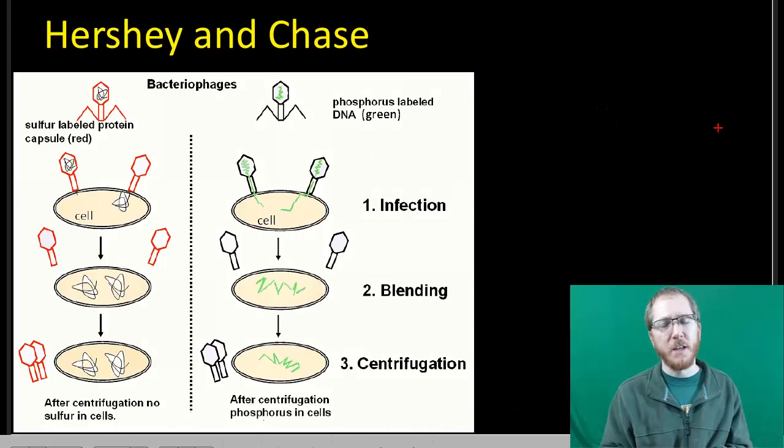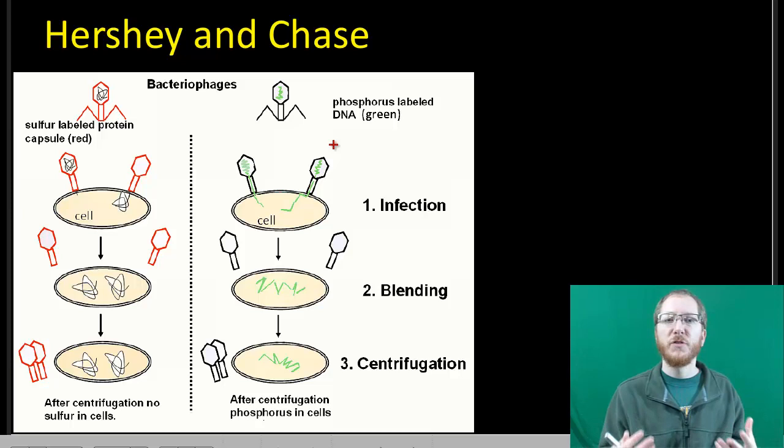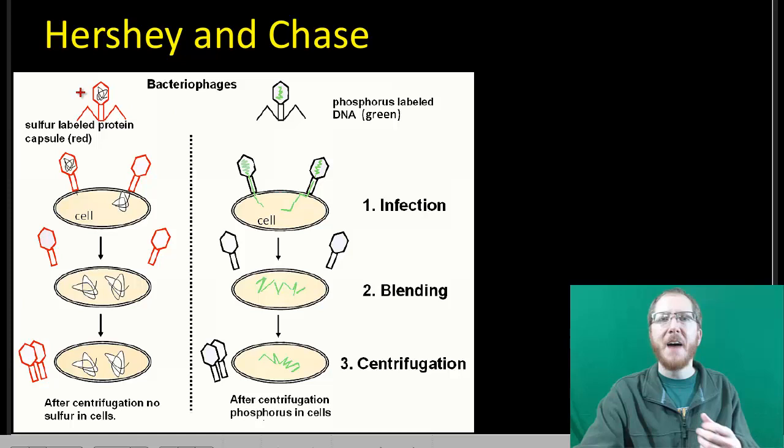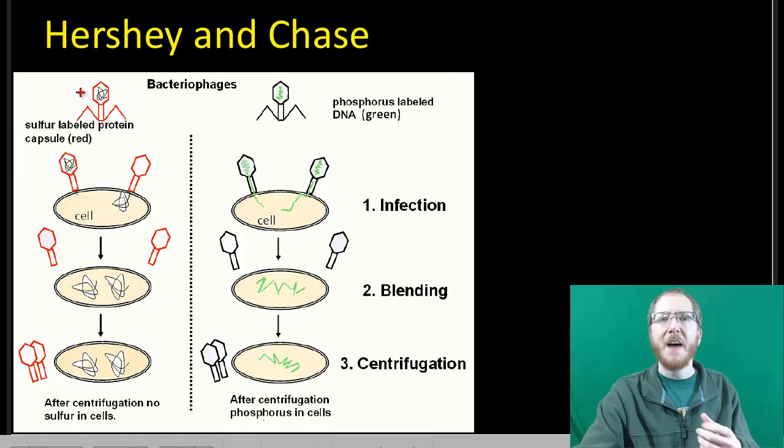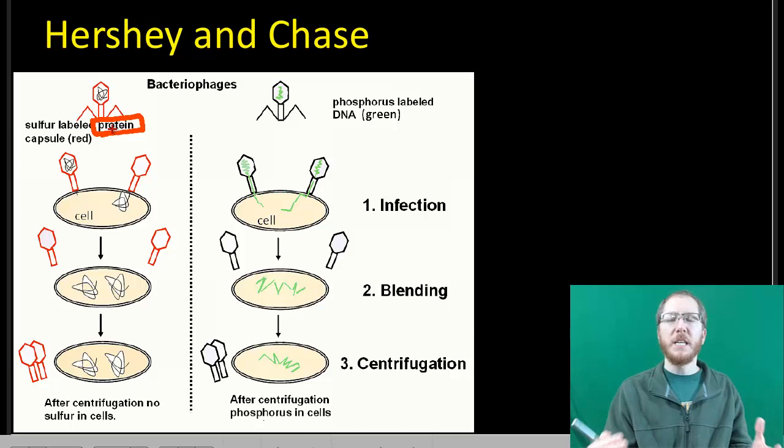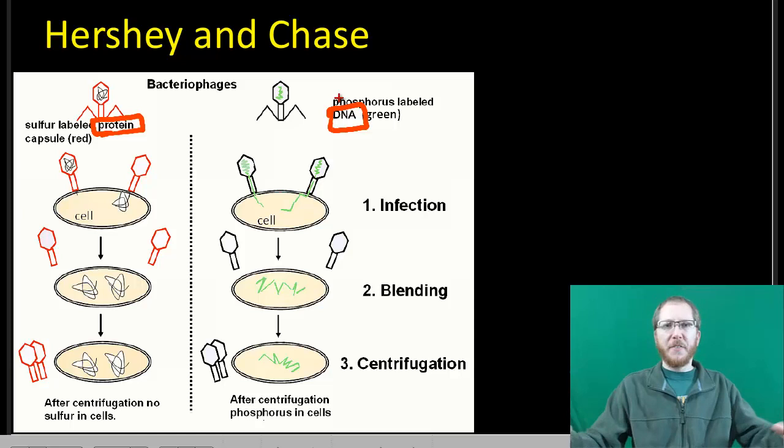But some people weren't fully convinced. So Hershey and Chase came along and said, let's see if we can figure this out. They were pretty smart. They had these viruses composed of just two things, proteins and DNA. They took some viruses and produced them in the presence of radioactive sulfur, which is only going to be in the proteins. They had a separate set produced in radioactive phosphorus, which would only be found in the DNA.